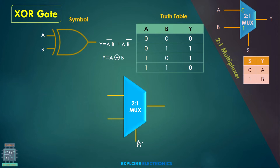Looking at the truth table for the a equal to 0 case: when a is equal to 0, output y is 0 1, which is the same as b. So b will be my output. When a is equal to 0 the first input will be selected, so if I put b here that will give the output 0 1.